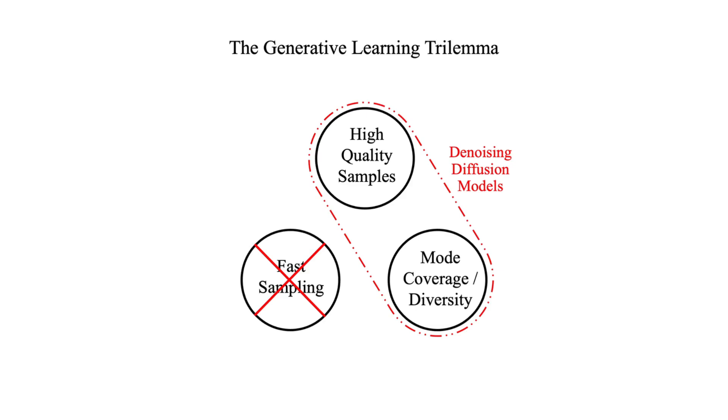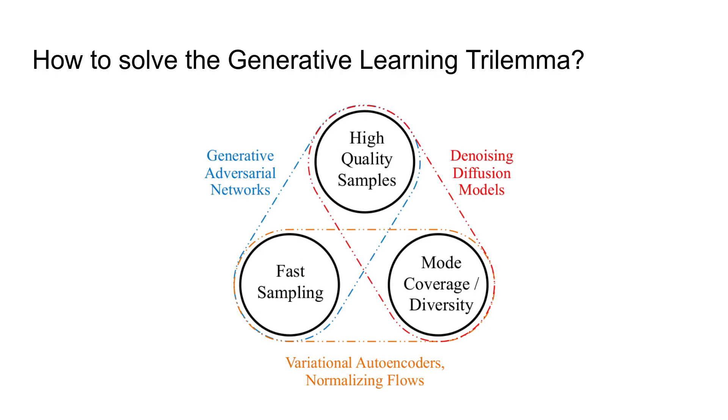But the weakest point of diffusion models is their sampling speed because in order to generate a single sample you have to go through this long diffusion process step by step. So we have seen several different models, none of which can offer all three qualities we want.